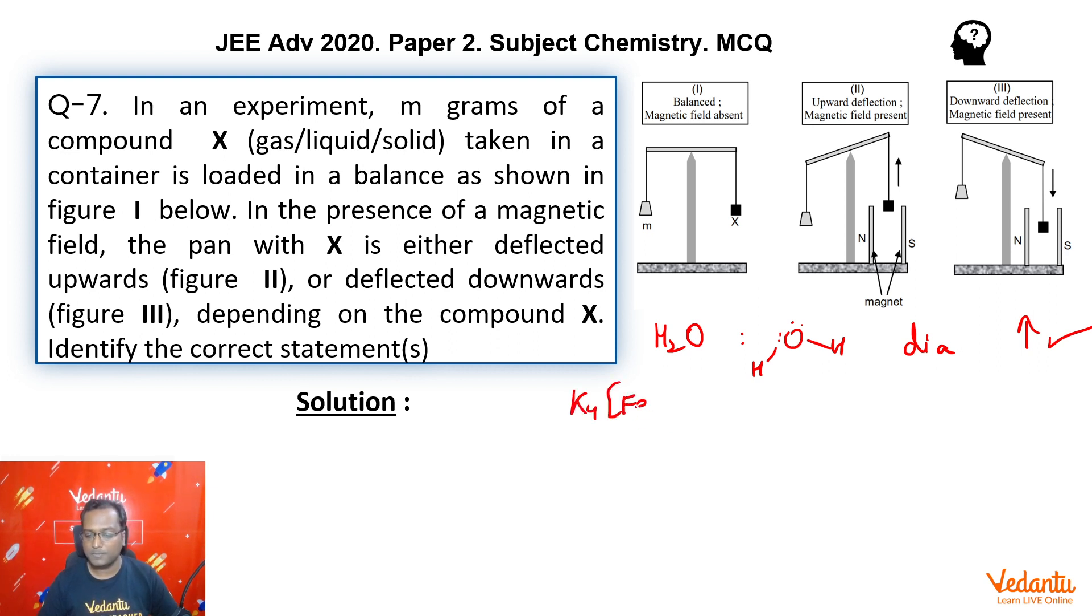Next, K4[Fe(CN)6]. Coordination compound. K4[Fe(CN)6] - iron is in +2 oxidation state. That means its electronic configuration is 4S0, 3D6. We can see that the coordination number here given to us is 6.